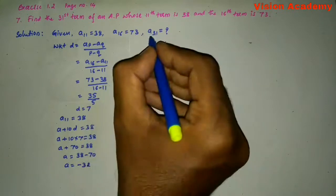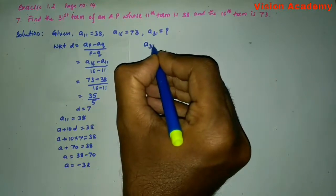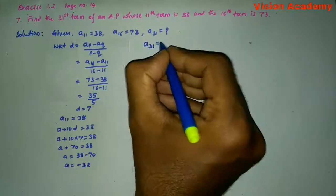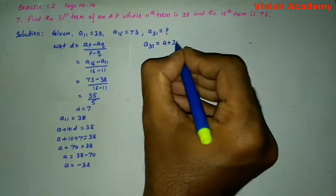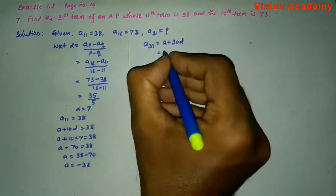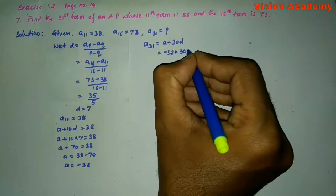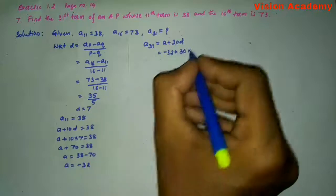Now, we need to determine A31 term. Let us write A31 term is equal to A plus 30D. Here, the value of A is minus 32 plus 30 into D is 7.